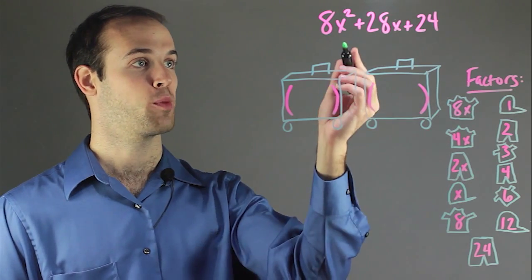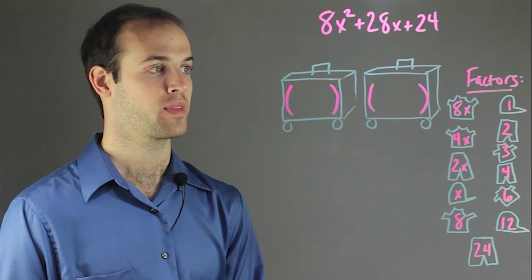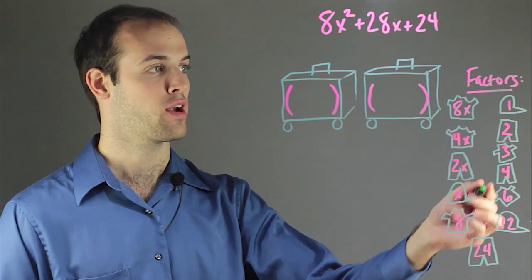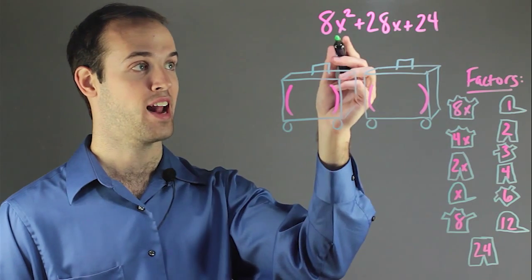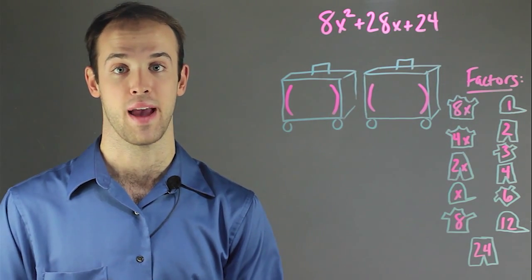And this is our trinomial. We have 8x squared plus 28x plus 24. And out here, I've written out all the factors of 8x squared and 24 that could possibly multiply together to make those terms.